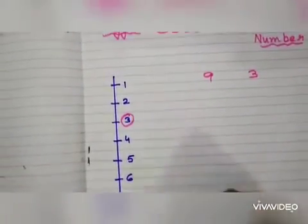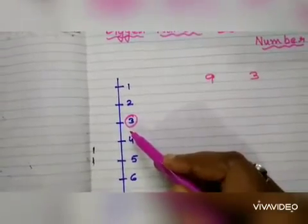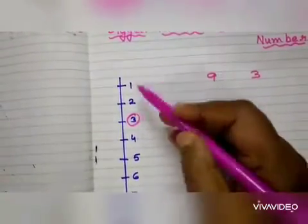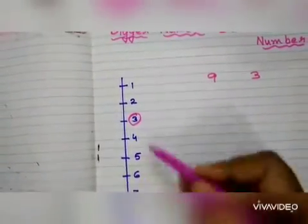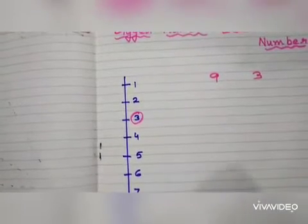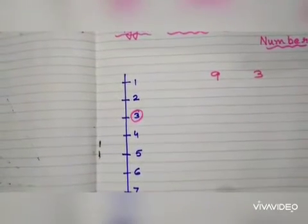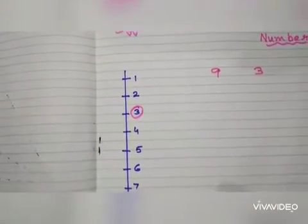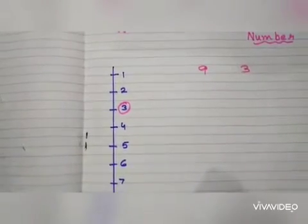See here in the number line, which number comes first is smaller number. And which number comes later, after, that number is called the bigger number.